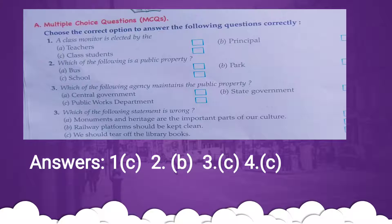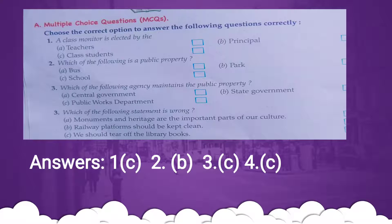Question four: which of the following statement is wrong? The three statements are: monuments and heritage are important parts of our culture; railway platforms should be kept clean; we should tear off library books. The wrong statement is 'we should tear off the library books.' MCQ answers: 1) class students, 2) park, 3) public works department, 4) we should tear off the library books.